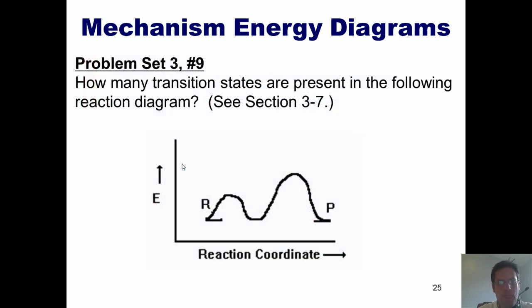Which brings us to this question. How many transition states are present in the following reaction diagram? Remember, this first thing right here is called the reactant. The final thing is called the product. The valley in the middle is called the intermediate. And the hills at the top are called transition states.